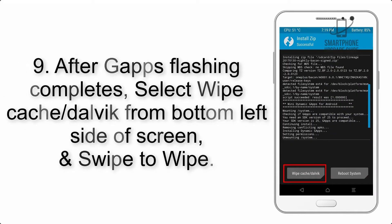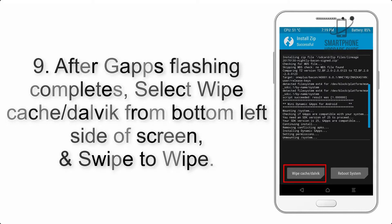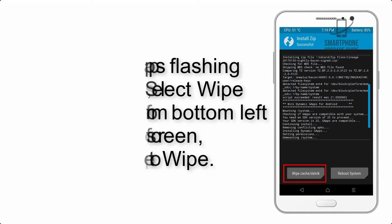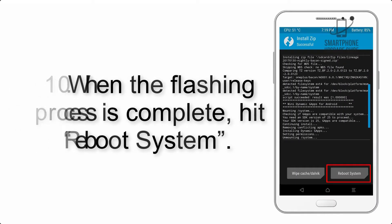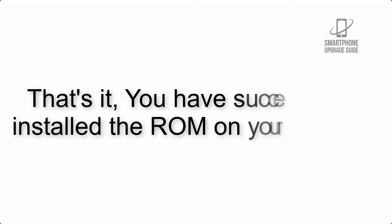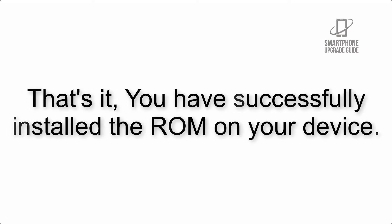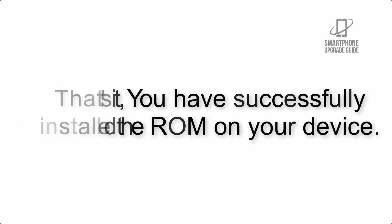Step 9: After G apps flashing completes, select Wipe Cache and Dalvik from the bottom left side of the screen and swipe to wipe. Step 10: When the flashing process is complete, hit Reboot System. That's it — you have successfully installed the ROM on your device.